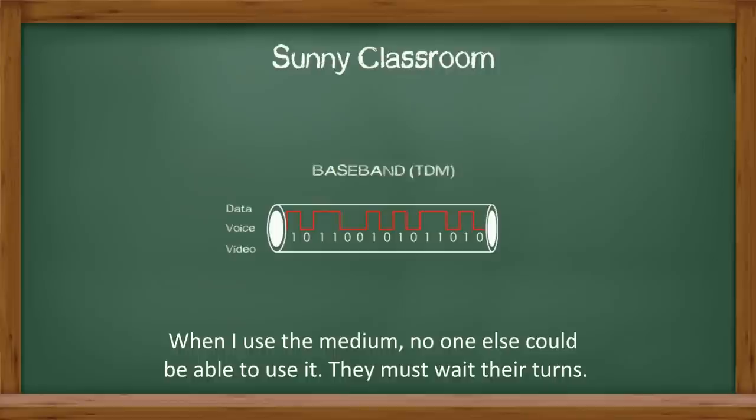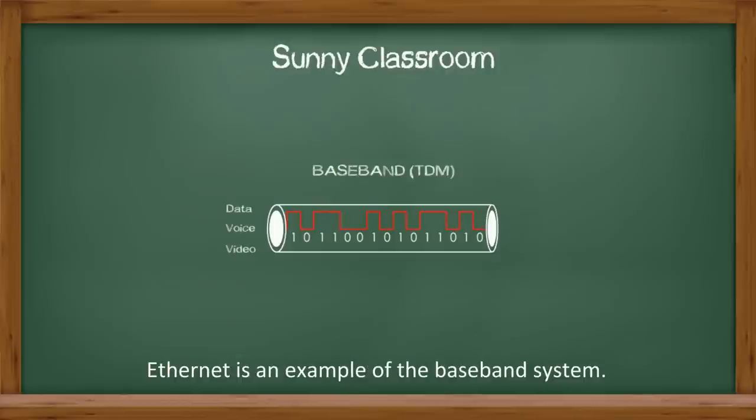They must wait their turns. Ethernet is an example of the baseband system. Regardless of their different versions, whether they are early Ethernet, fast Ethernet, or 10 gigabit Ethernet, they all contain the word base. They are baseband.